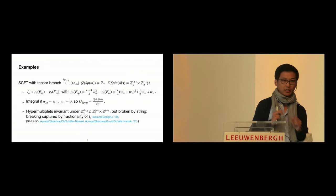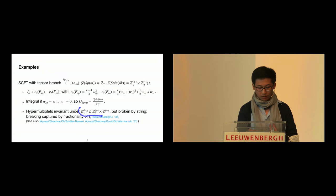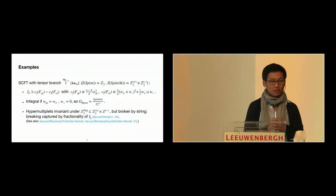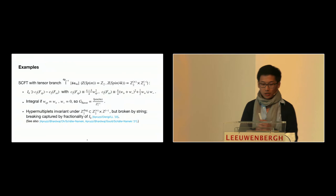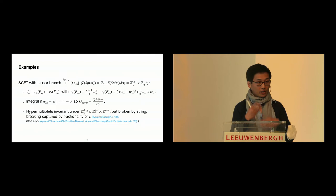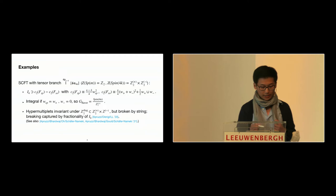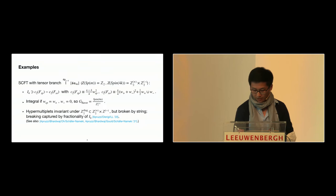If you look at the hypermultiplets, which are in the vector representation of that SO, you would have expected to also turn on the diagonal inside the Spin flavor symmetry because that leaves the vector representation invariant. But if you follow Sakura's work, you can show explicitly from geometric constructions that there are certain stringy states that break this diagonal Z_2. This is indeed captured by the fractionality of the instanton density. One can directly apply this to more complicated examples — for instance, if you look at a large class of so-called orbi-instantons.